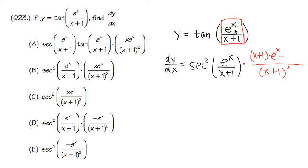Minus the top function, which is e to the x, times the derivative of the bottom function. And let's see. The derivative of x is just 1. Derivative of 1 is 0. So I'm pretty much just multiplying by 1.